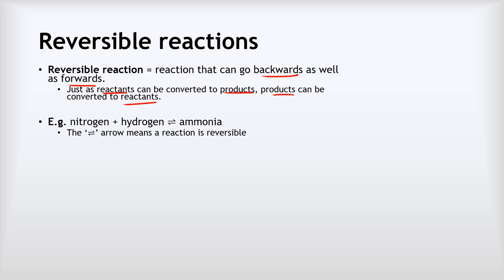An example of that might be this one — we'll look at this a lot more later in the video. Nitrogen reacting with hydrogen to make ammonia is a reversible reaction. If you're paying attention, you might have noticed the funny-looking arrow there. We call it the equilibrium arrow or the reversible reaction arrow, and it means that a reaction is reversible.